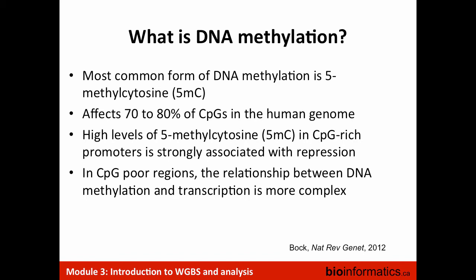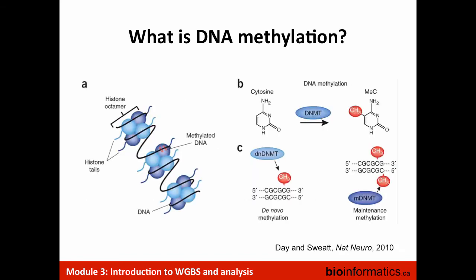A high level of 5-methylcytosine at CpG-rich promoters is strongly associated with repression — promoters with high methylation tend to be repressed. In CpG-poor regions, that relationship is a little bit more complex. The DNA is wrapped around the histone, and methylation of DNA is this transformation involving 5-methylcytosine. It's a reversible process where you can lose that methylation, but typically it's a pretty stable mark.